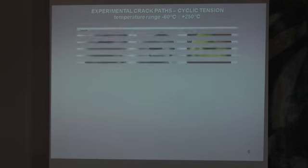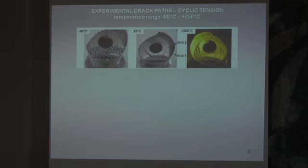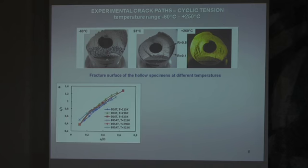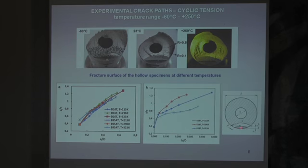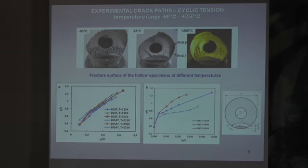Now I would like to show you the crack paths for low, room and high temperature. Next, we can show you the relation between aspect ratio and crack depth in the middle thickness of hollow specimens. This is the data for both aluminum alloys and the range of tested temperatures. You can see the relation between aspect ratio and crack length D, that is the crack length, on the free surface of hollow specimens. You see how this changes for different test temperatures in one of the tested aluminum alloys.